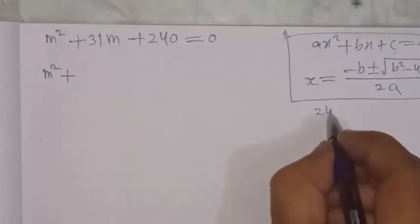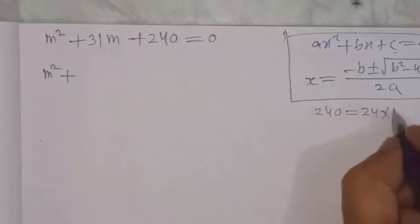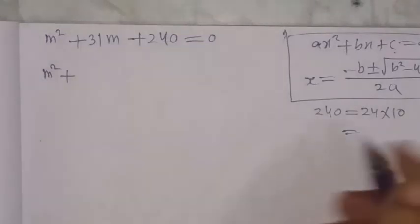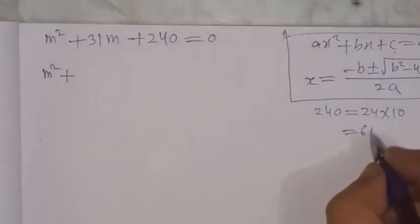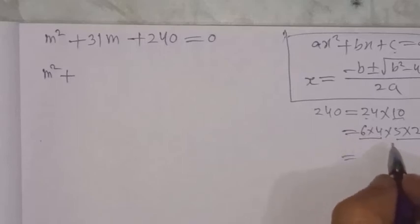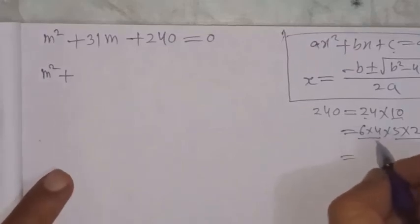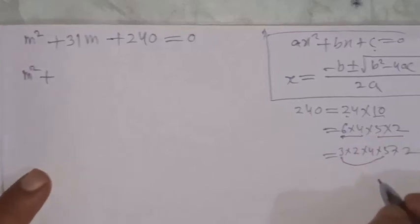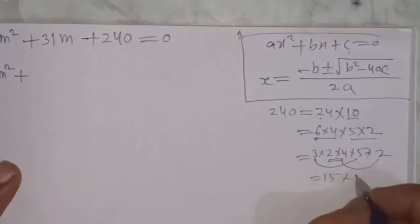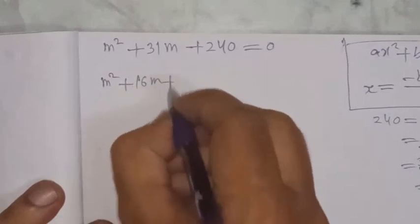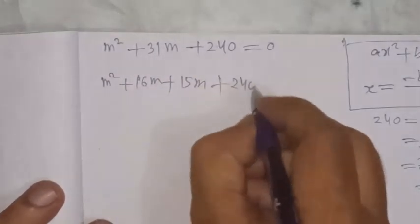We need to factor m² + 31m + 240. We split 240 into two parts whose product is 240 and sum is 31. We find 16 × 15 = 240, and 16 + 15 = 31. So the factors are (m + 15)(m + 16) = 0.